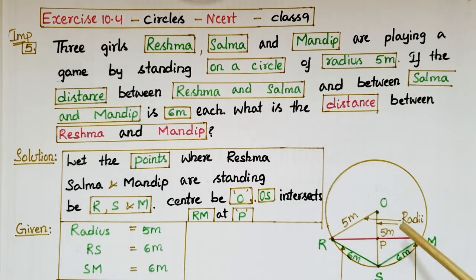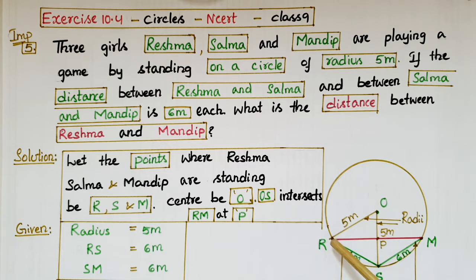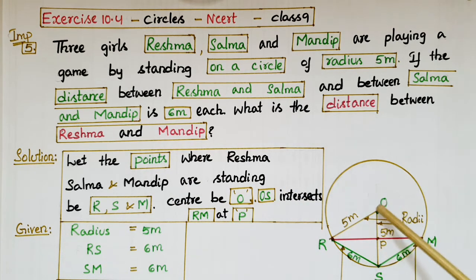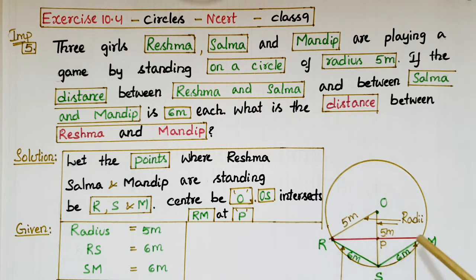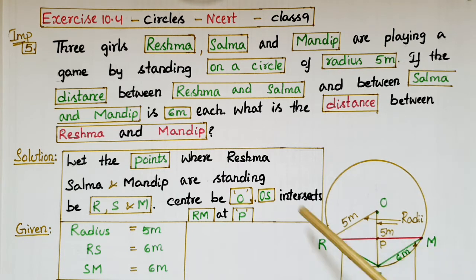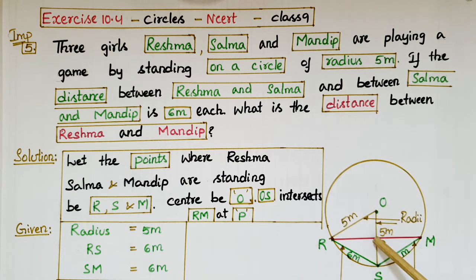Here, the center of the circle let be O, and let the points where Reshma, Salma, and Mandip are standing be R, S, and M. If you join points O and S, we have to find the distance between R and M. Join O and S — that line segment intersects line RM at point P.